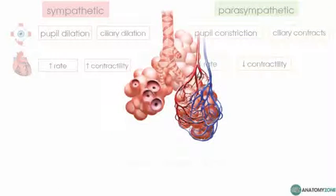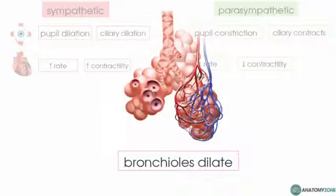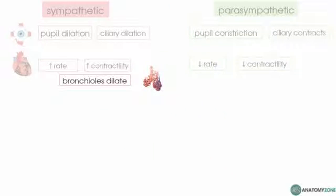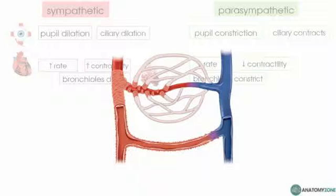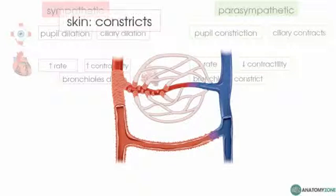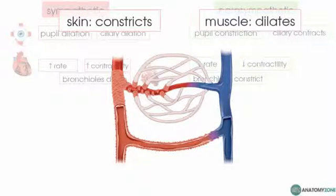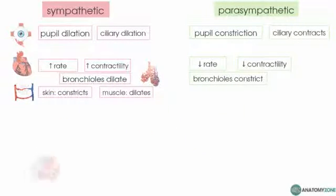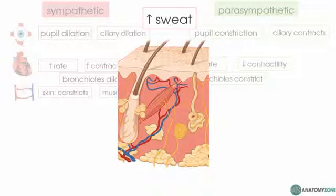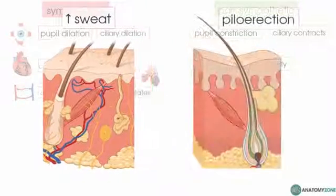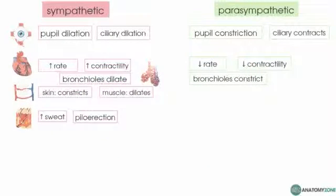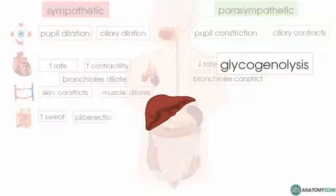In the lungs, sympathetic activation dilates the bronchioles to allow more oxygen into the body, whereas the parasympathetic causes constriction. Blood vessels supplying the skin constrict and blood is shunted towards skeletal muscle to allow running or fighting. Sweat glands are stimulated causing increased sweating in preparation for increased heat, and the pilomotor muscles contract. Glycogen stores in the liver are mobilized, causing glycogen breakdown and an increase in blood sugar.